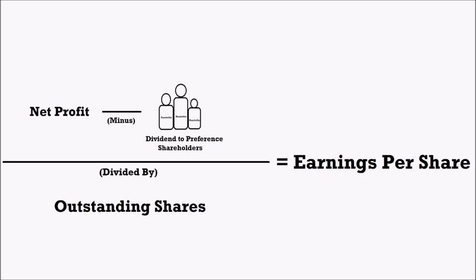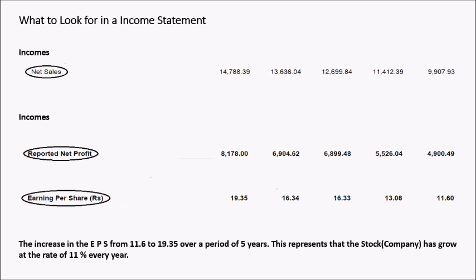By subtracting income tax from PBT we get net profit. After preference dividend is paid out of the profit after tax, we are left with earnings available to equity shareholders. When we divide the earnings available to equity shareholders by the number of outstanding equity shares, we get earnings per share, or EPS, which is the most important item to watch out for.